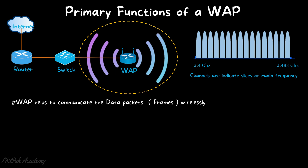Instead, wireless access points use wireless technology to connect network devices together, unlike the network switch and hub. In this network diagram, a router is connected to the internet, and a network switch is connected to that router. In normal cases, we can connect devices like PCs, laptops, and printers to the network switch using network cables so they can communicate together.